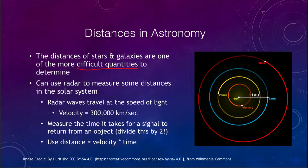One of the few direct methods to get distances is by using radar. Radar measurements allow you to measure distances within the solar system, and only to very close objects — not even everything within the solar system. It works by the fact that radar waves, like any electromagnetic radiation, travel at the speed of light. So we know how fast they travel: 300,000 kilometers per second.